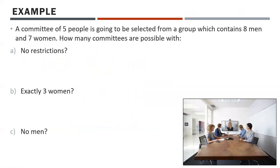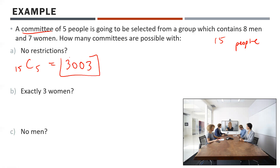A committee of five people will be selected from a group of eight men and seven women. How many committees are possible with no restrictions? We don't care how many men or women are on the committee — there are 15 people total and we choose five. So 15C5 gives us 3,003 possible committees.